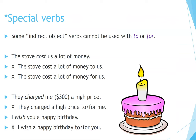Special verbs: some indirect object verbs cannot be used with 'to' or 'for.' For example: 'The stove cost us a lot of money' — not 'The stove cost a lot of money to us' or 'for us.' 'They charged me three hundred dollars' or 'They charged me a high price' — not 'They charged a high price to or for me.' 'I wish you a happy birthday' — not 'I wish a happy birthday to you' or 'for you.'